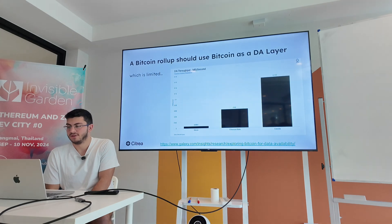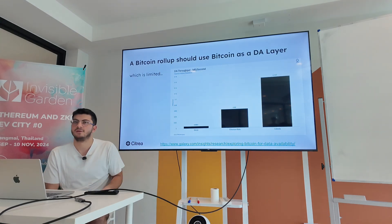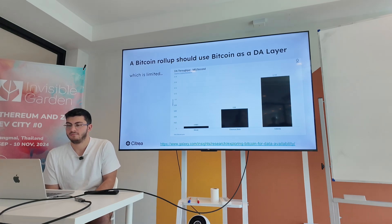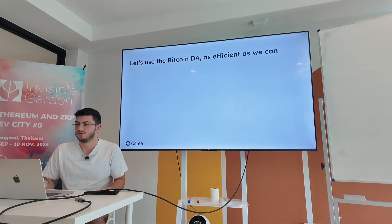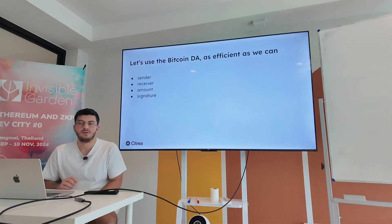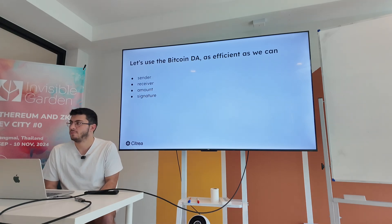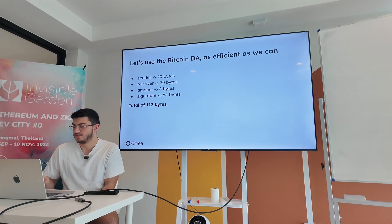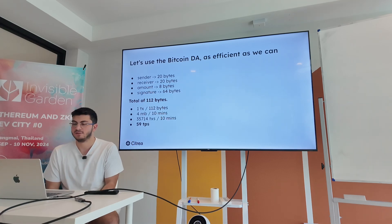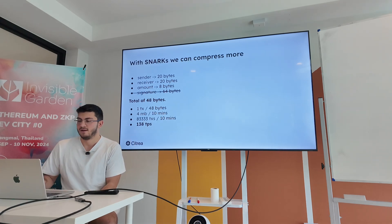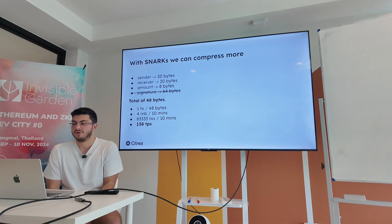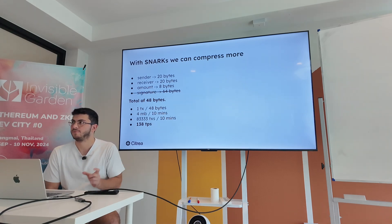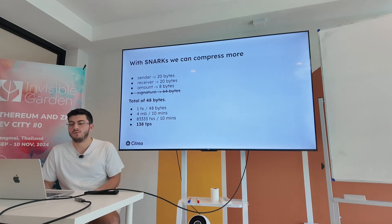There's an issue: Ethereum blobs and Celestia have huge block sizes, but Bitcoin has a limited block size of four megabytes per 10 minutes. My take is that since Bitcoin is a limited resource, we should use it as efficiently as we can. A minimal transaction has a sender, receiver, amount, and a signature — totaling about 112 bytes. This leads to about 60 transactions per second given Bitcoin's four megabytes per 10 minutes. But with ZK proofs — with SNARKs — we can compress more. We can get rid of signatures because we can prove those signatures were there, and with a single ZK proof we can get to about 140 TPS.